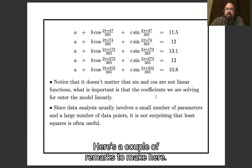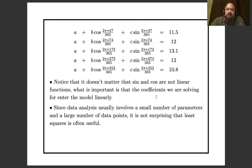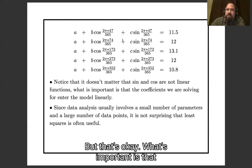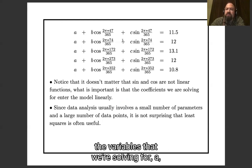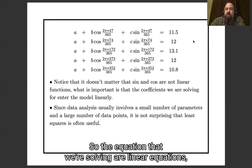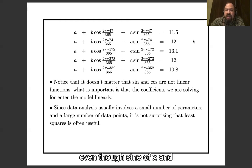Here's a couple of remarks to make here. Sine and cosine are not linear functions, but that's okay. What's important is that the variables that we're solving for, a, b, and c, do show up linearly. So the equations that we are solving are linear equations, even though cosine of x and sine of x are not linear functions.